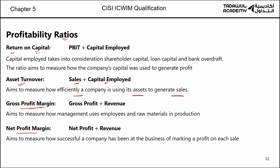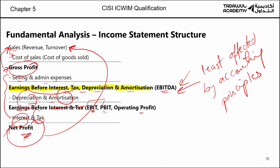Gross profit margin tells you how management uses employees and raw materials in production. If gross profit is worse, cost of production has gone up. If net profit is improving, your overheads are going down — you are making more profit for every dollar of sale. Note that sales, revenue, and turnover all mean the same thing — you can see any of them in the exam.